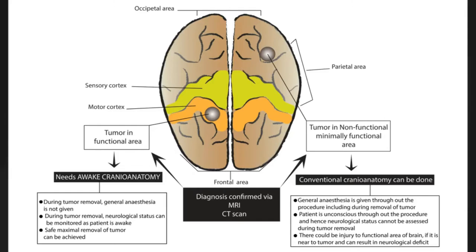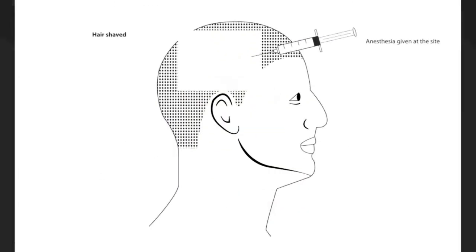During a conventional craniotomy, the patient is completely unconscious and doesn't allow neurological assessment, so it may lead to significant neurological deficits. On the other hand, in awake craniotomy, during tumor removal the patient is conscious, and this allows the surgeon to assess the neurological status of the patient as tumor resection is being carried on, so the surgeon will be able to remove maximum tumor with minimal neurological deficits.